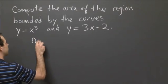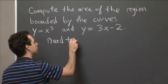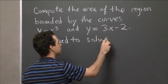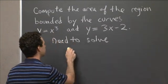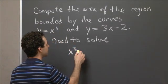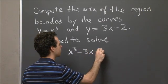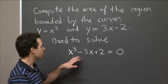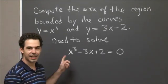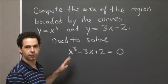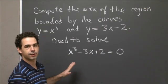So we need to solve the equation x cubed equals 3x minus 2, or x cubed minus 3x plus 2 equals 0. So this is a polynomial equation. It's not quadratic, right? It's a cubic equation. So that means it's hard to solve in general.